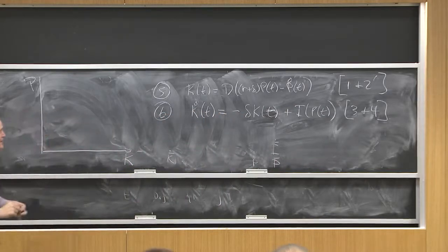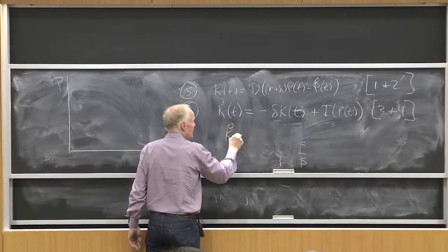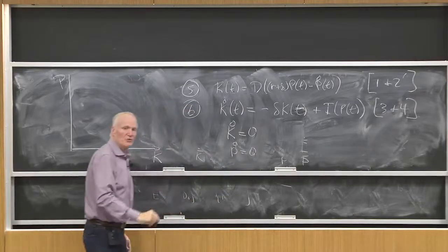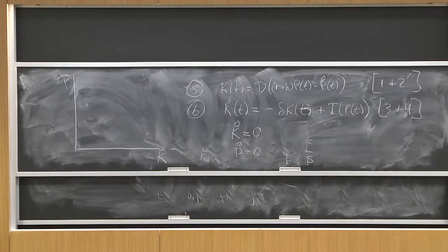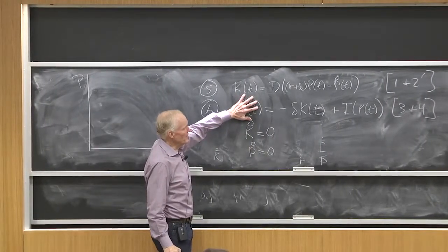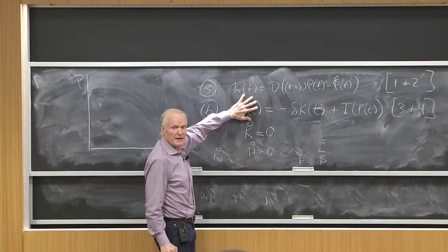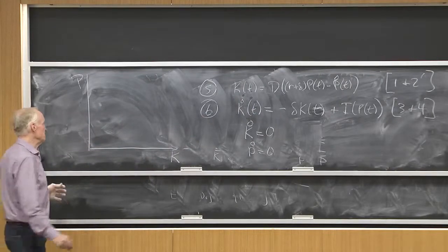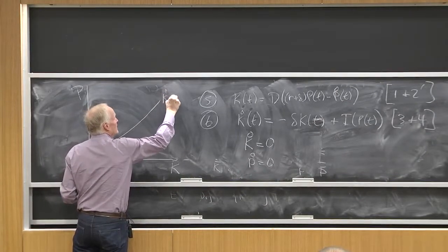Now, whenever you draw a phase diagram, it's always useful to look at the equations k dot equals 0 and p dot equals 0. Those are the two places where k is constant and p is constant. Well, let's first do the k dot equals 0. That's pretty easy. That just looks like my steady state supply equation. That's where I'm producing exactly enough to offset depreciation. So my k dot equation looks k dot equals 0.